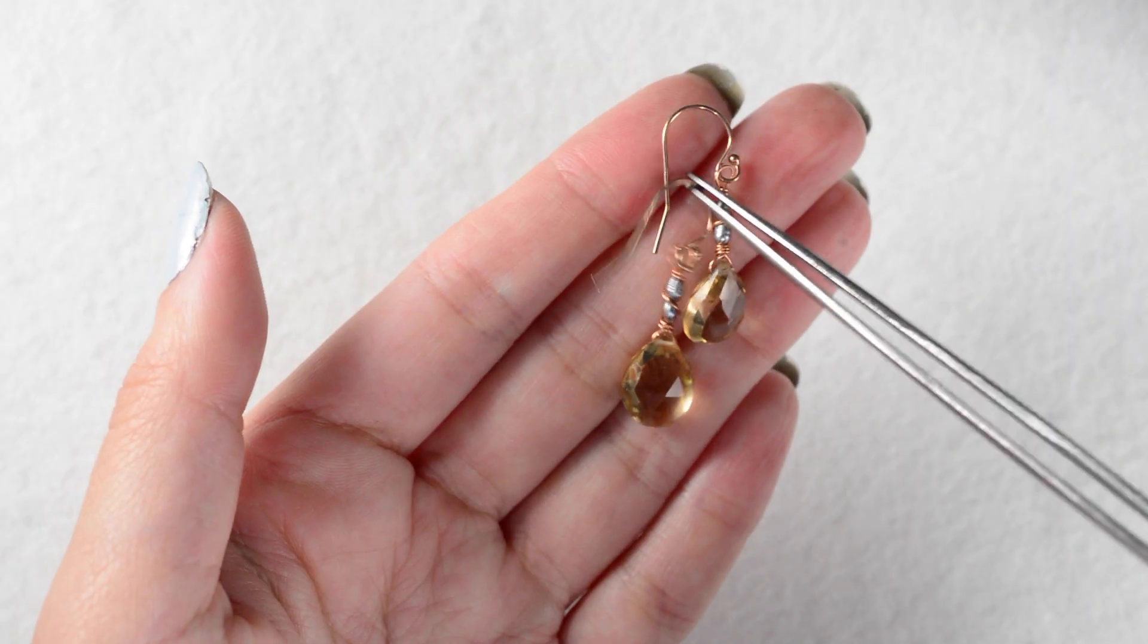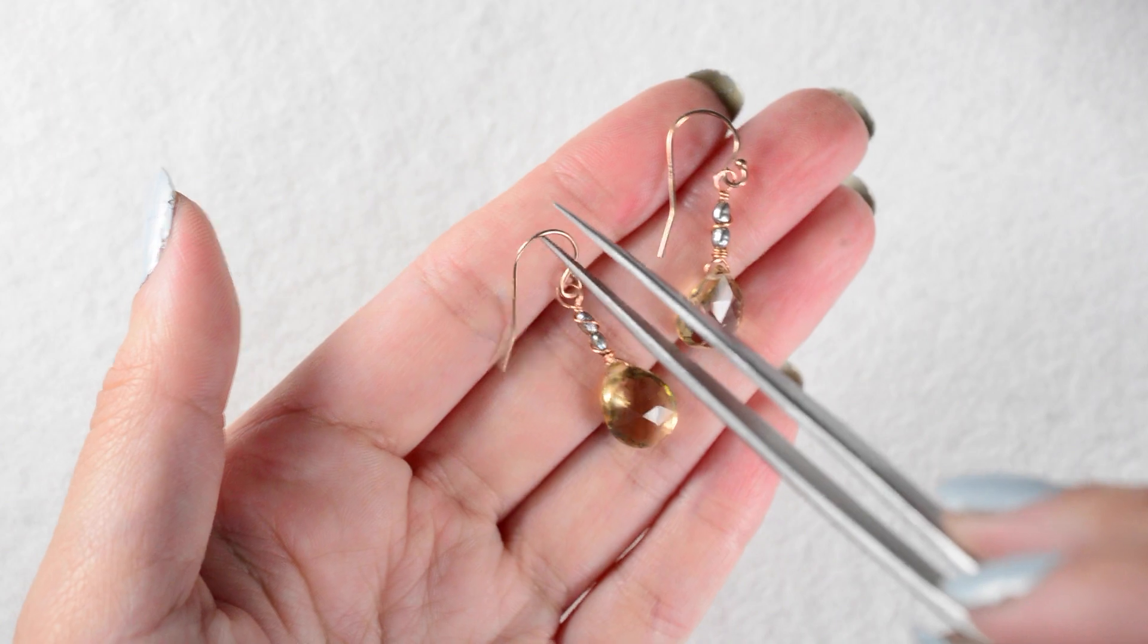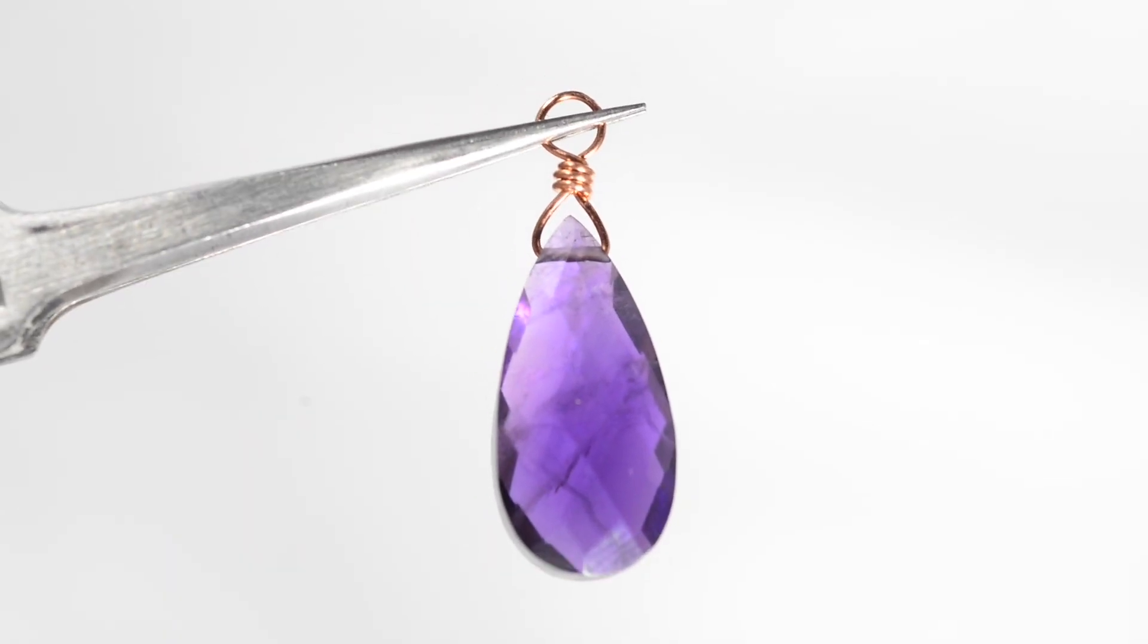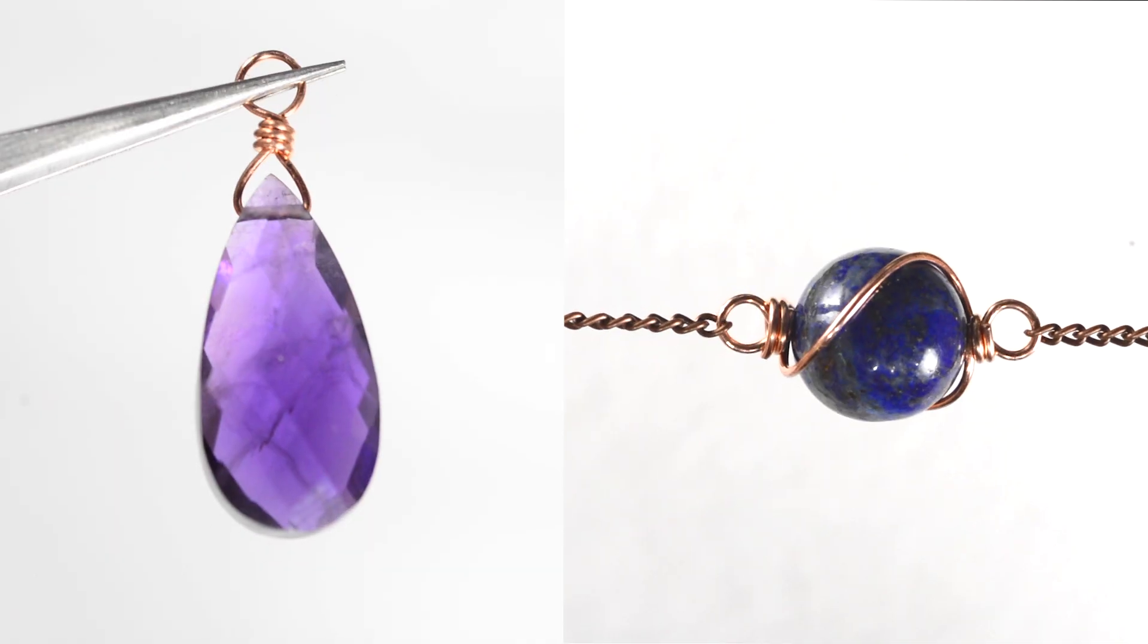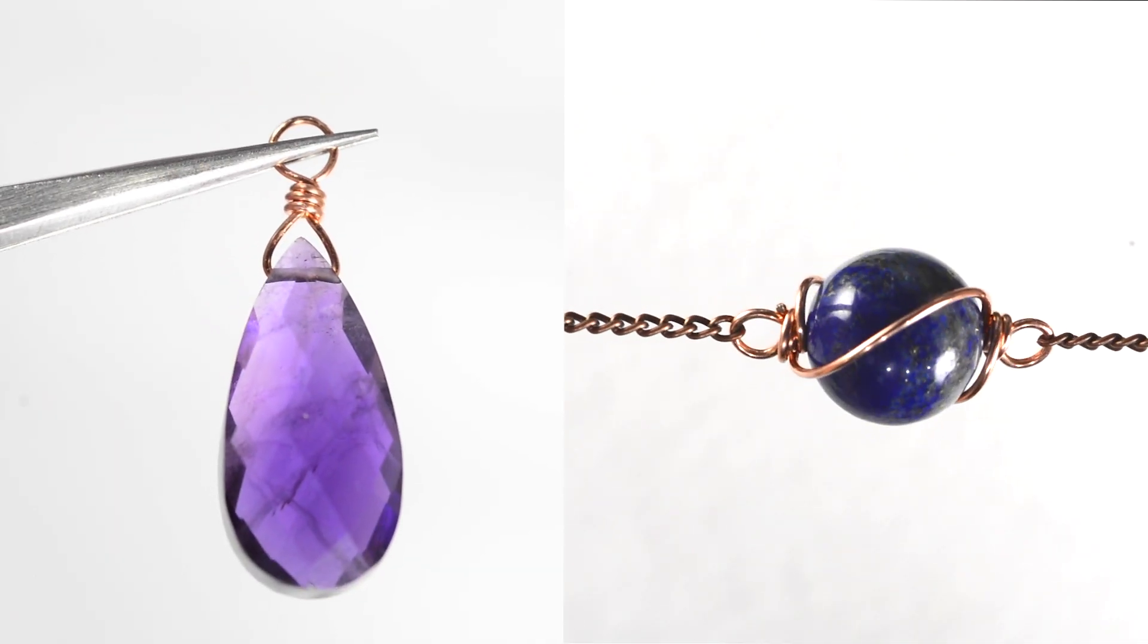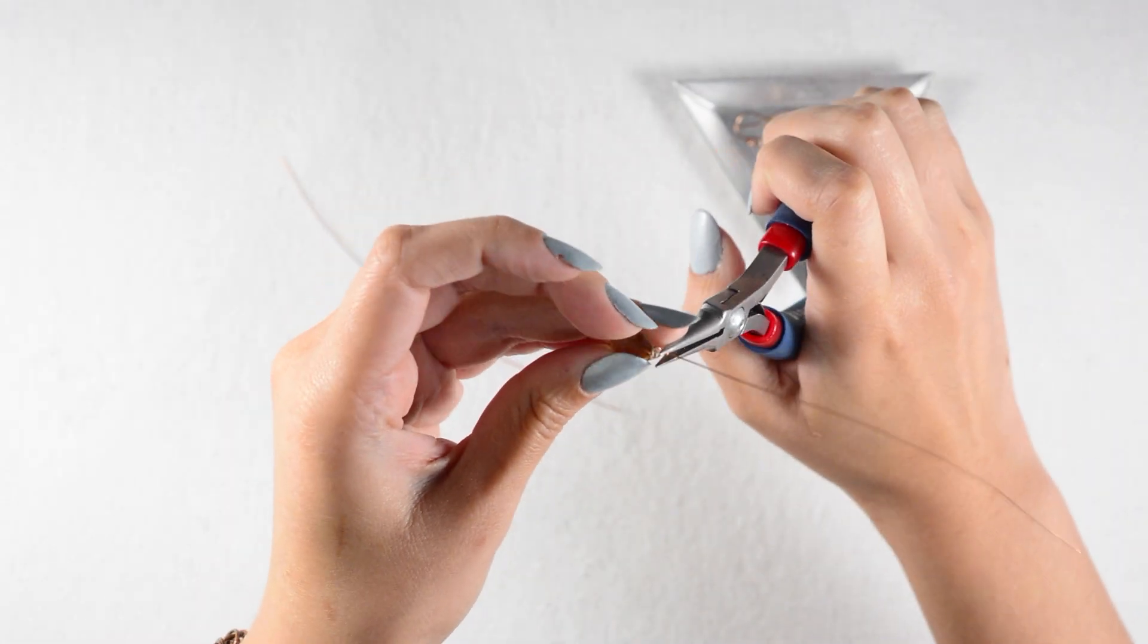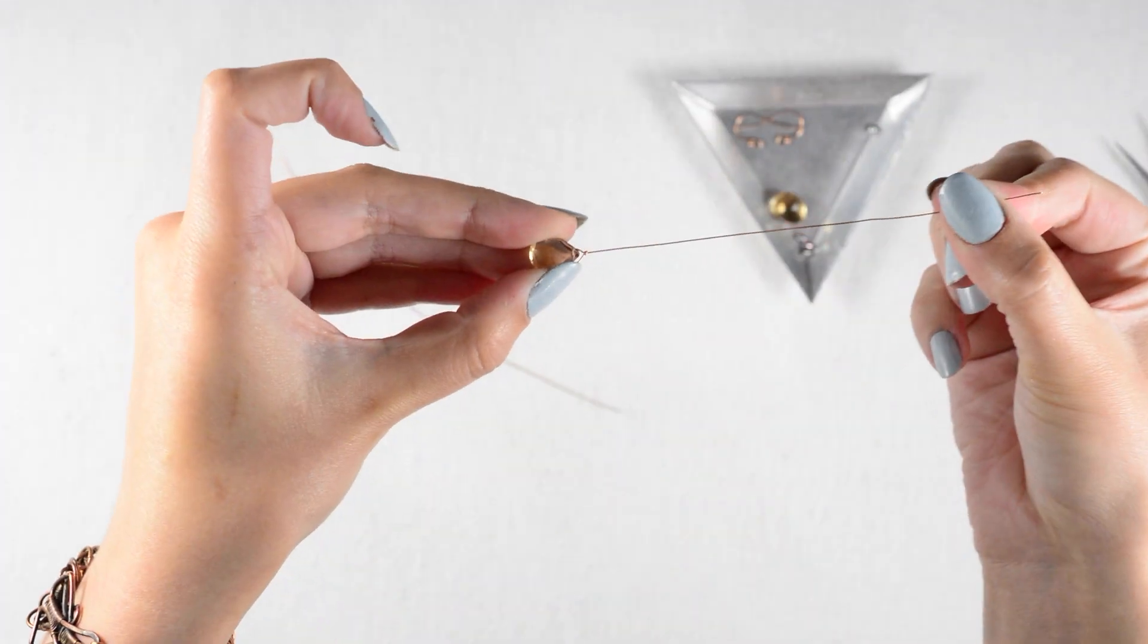For this design I mashed up a couple different techniques, so if you haven't learned how to create a wire wrapped bail or how to do the orbit wrap from my three alternative wire loops video, you can go back and check those out now. I'll link them below, but I'll also be taking this step by step so hopefully these instructions here should suffice.